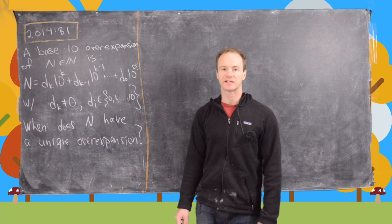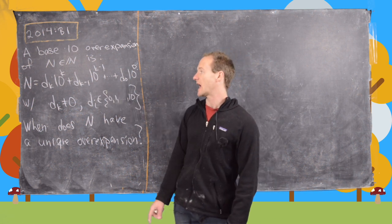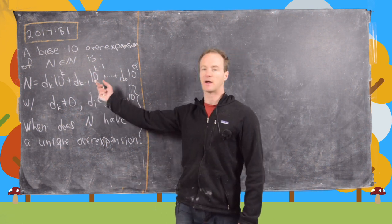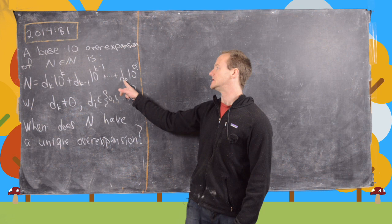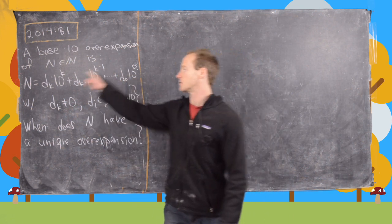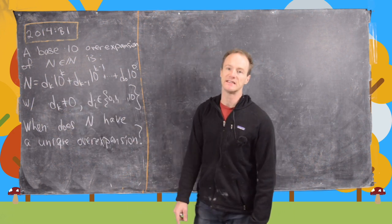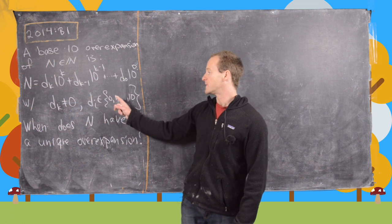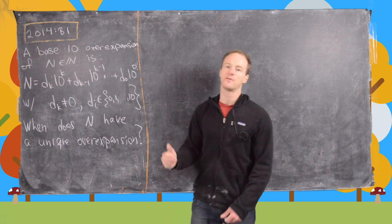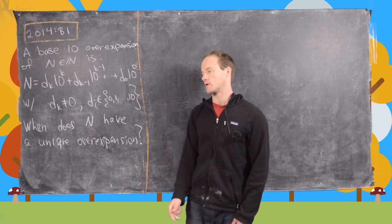A base 10 over-expansion of a natural number n is a sum given by d_k times 10 to the k plus d_{k-1} times 10 to the k minus 1, all the way down to d_0 times 10 to the 0, where d_k is not equal to 0, and all of the d_i's run from 0 up to 10. Notice if we had stopped at 9, that would have been a normal base 10 expansion, not an over-expansion.